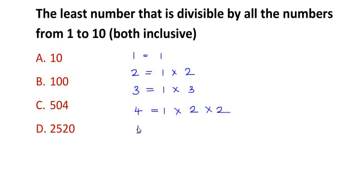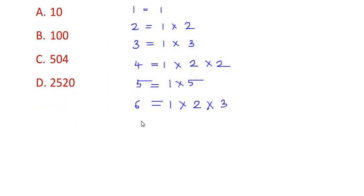Then we have the factor of 5 as 1 times 5, and 6 is 1 times 2 times 3. Then factor of 7 is 1 times 7. Then factor of 8 is 1 times 2 times 2 times 2.